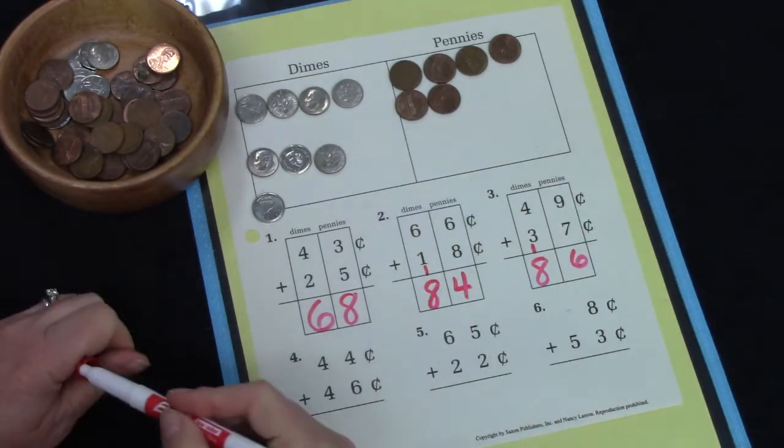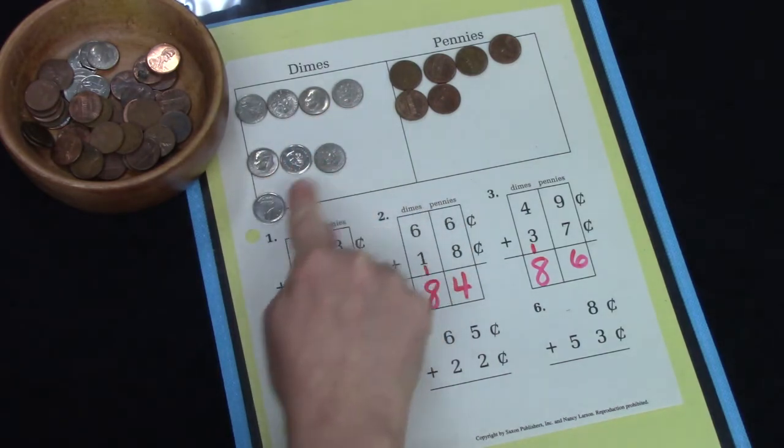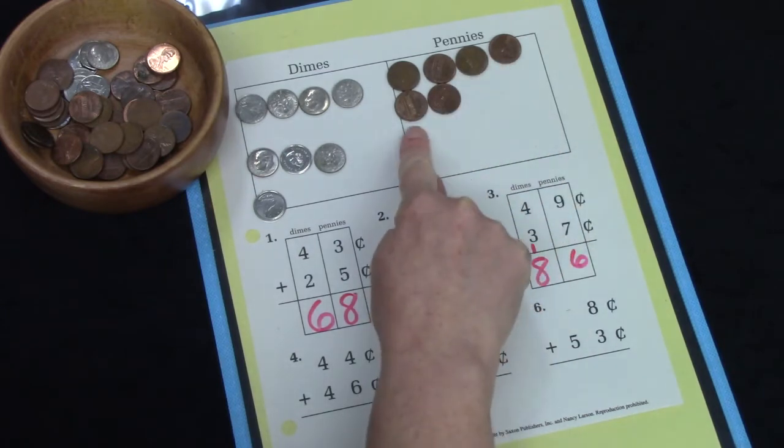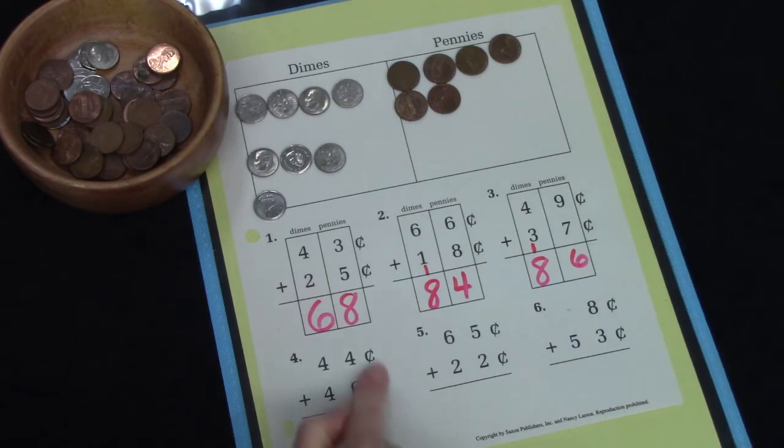Well, let's count our money. 10, 20, 30, 40, 50, 60, 70, 80, 81, 82, 83, 84, 85, 86. Let's try one of these.